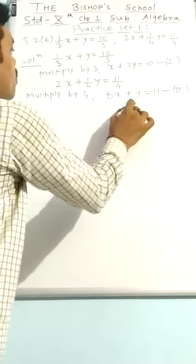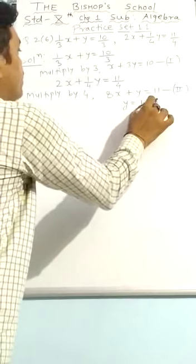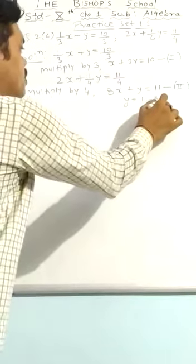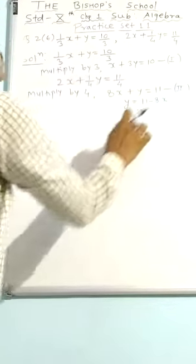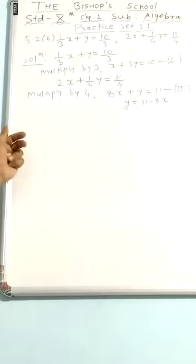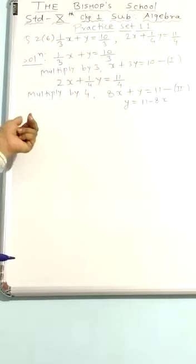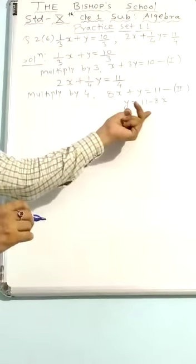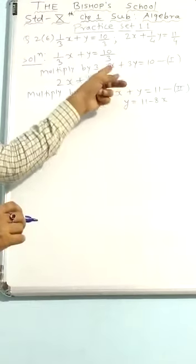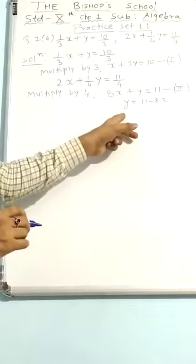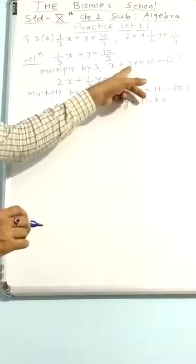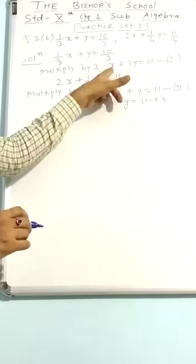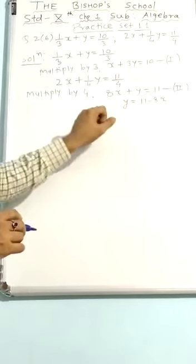Therefore, y equal to 11 minus 8x. Here I am using another method — method of substitution. In the method of substitution, the value of y we will substitute in the first equation, so in place of y I can keep this. Once we get the value of x, we can get the value of y later.